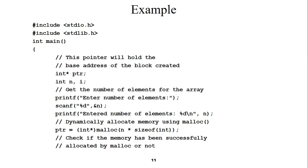We have to take the number of elements the user wants in the array. In dynamic memory allocation we can allocate memory at runtime, while in the case of arrays we have memory at compile time. The user will enter how many elements they want — if they enter 10, then 10 memory blocks will be assigned; if they enter 20, then 20 memory blocks will be assigned. Here a message gets printed: 'Enter number of elements'.